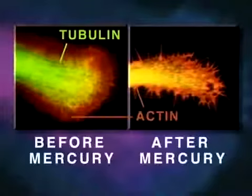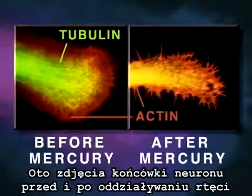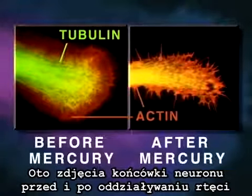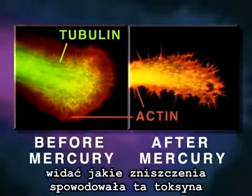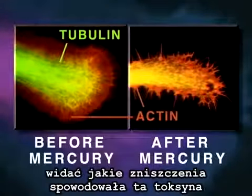Shown here is a neurite growth cone stained specifically for tubulin and actin, before and after mercury exposure. Note that the mercury has caused disintegration of tubulin microtubule structure.